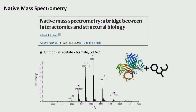This would also perfectly fit with our LC-MS-based metabolomics. However, the problem is that LC-MS with reversed phase is typically performed at low pH with acetonitrile or methanol as mobile phase — and that's of course not very native-compatible.